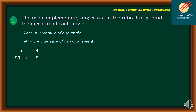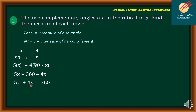So x over 90 minus x — the ratio of the measure of 1 angle to its complement — is equal to 4 over 5. Using the cross products, I have 5 times x is equal to 4 times (90 minus x). Using the distributive property, I have 5x equal to 360 minus 4x. Put together the variables: add both sides by 4x. So 5x plus 4x equals 360, which gives 9x equals 360. Divide both sides by 9.